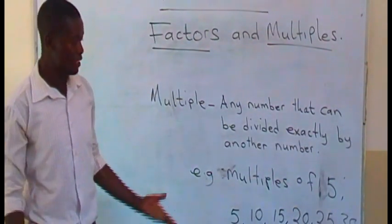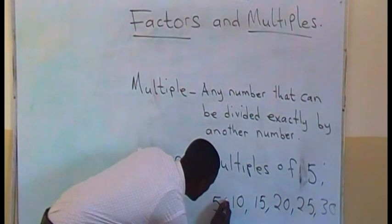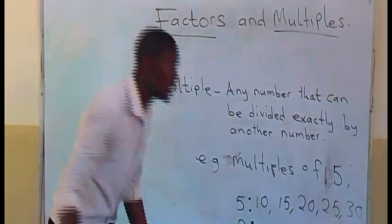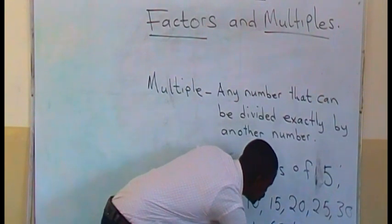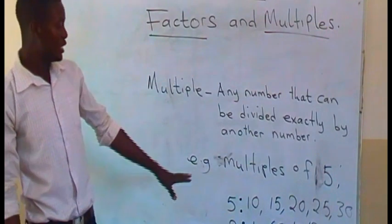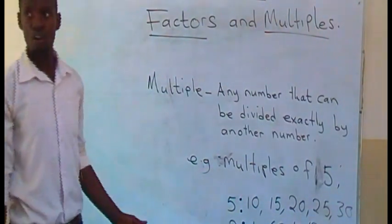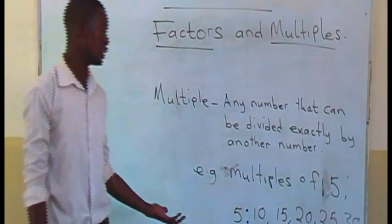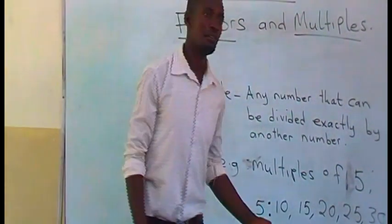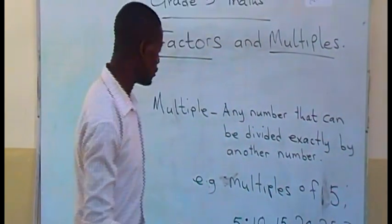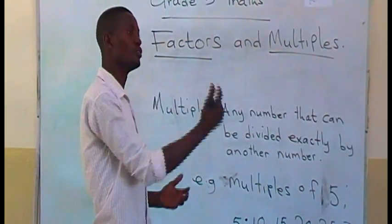If we say multiples of 2, you simply count in 2s. The multiples of 2 are: 2, 4, 6, 8, 10, 12, and going up. If you are asked to find multiples of 10, you simply count in 10s. The numbers you are finding are multiples of that given number.